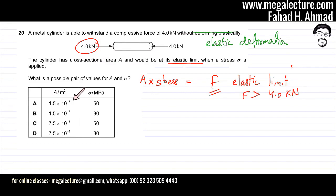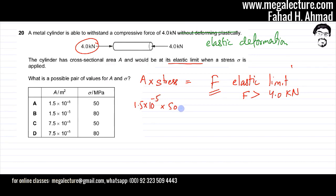For option A, the cross-sectional area and stress are given, with stress in megapascals (×10⁶). So it's 1.5×10⁻⁶ multiplied by 50×10⁶, which gives a force of 0.75 kilonewtons. This force is considerably lower than 4 kilonewtons, so this option cannot be the answer.